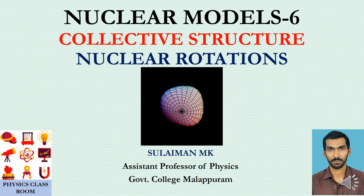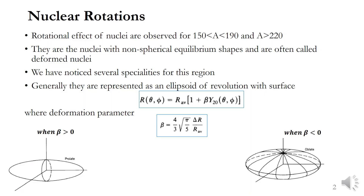Good morning friends, once more welcome back to the collective structure of nuclear models. Today we will discuss the nuclear rotations effects. In the last few classes we found that several properties could be explained using the shell model, but some properties, especially the excited states of even-even nuclei and a few other properties, could not be explained using the shell model. Hence we introduced the collective model. We already mentioned that there can be two types of collective motions: nuclear vibrations and nuclear rotations. In the last class we discussed the nuclear vibrational effects, and here we will discuss the nuclear rotational effects.